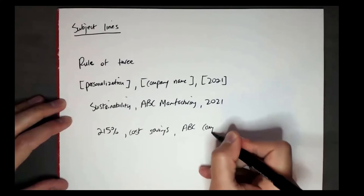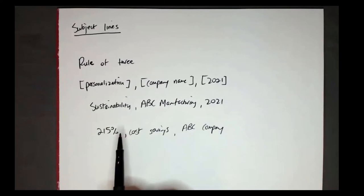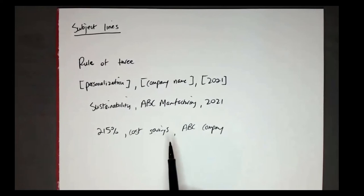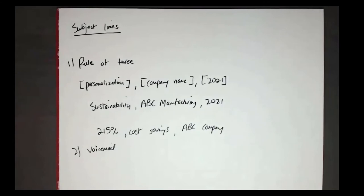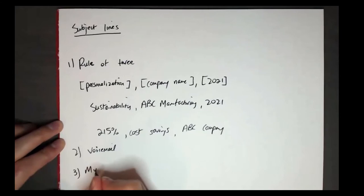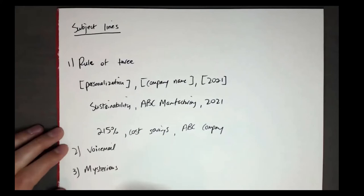Another angle: if you find something personal to the prospect — like an accomplishment or metric on their LinkedIn — you could put three seemingly random things together. For example, '215% cost savings, [Company Name].' That's a variation you can test. The second subject line is the voicemail trick: leave a voicemail first, then send an email with the subject line 'Just left you a voicemail' — that's a really easy and effective one.